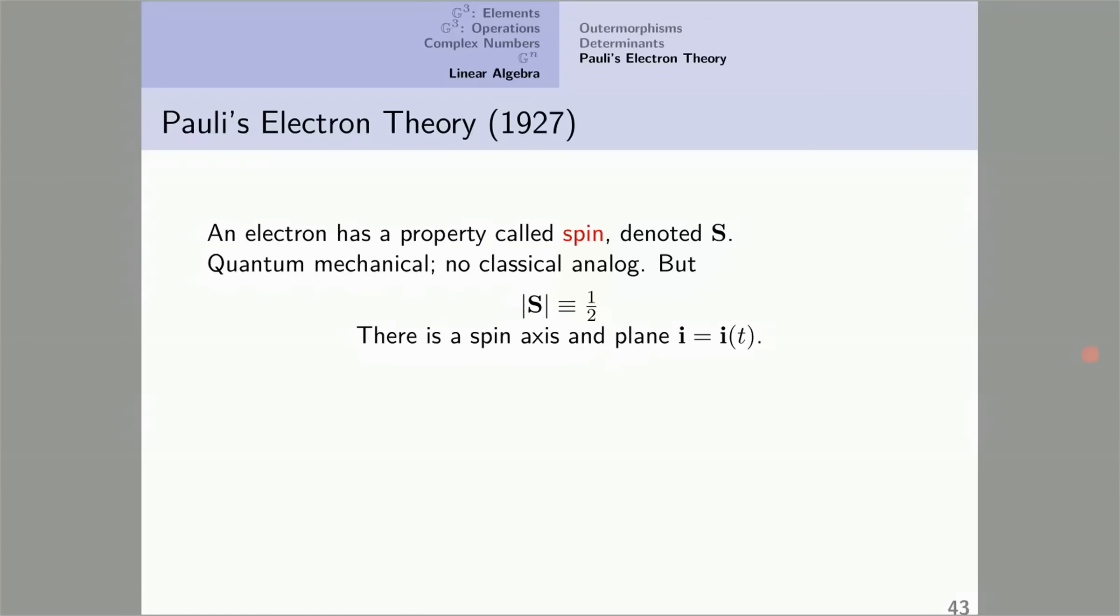There's an axis of spin, and orthogonal to it, there's a plane of spin, and it's denoted for us I, and I is a function of time.